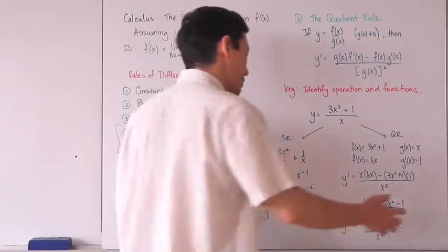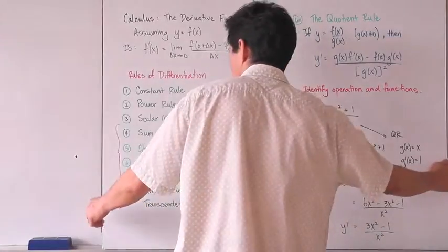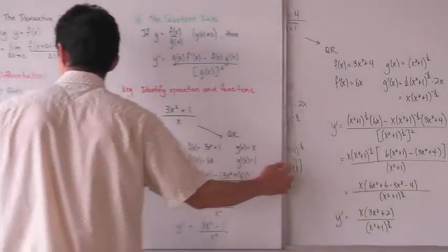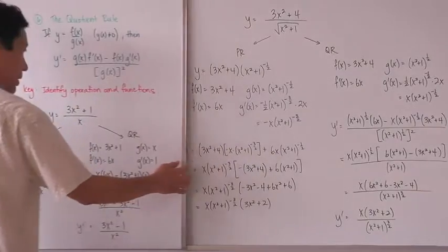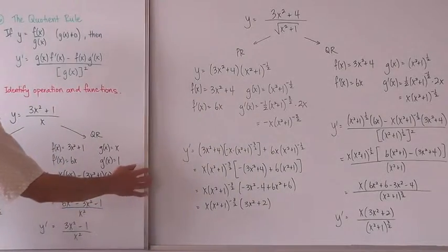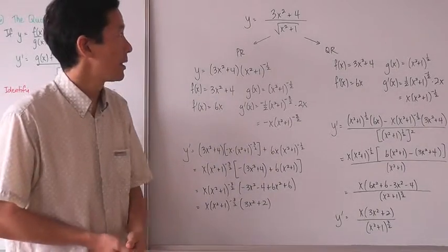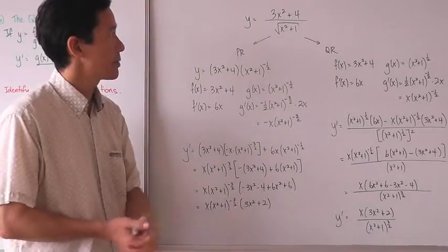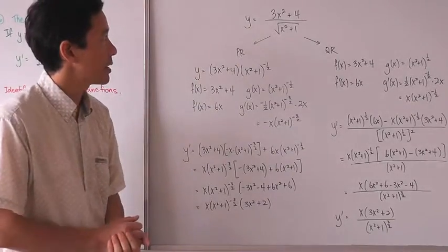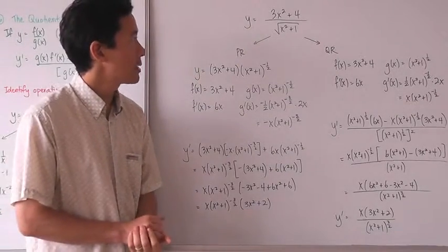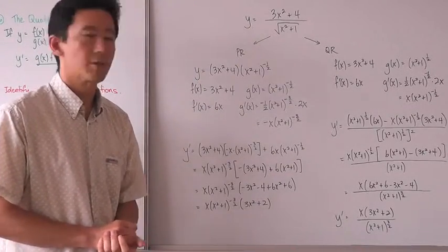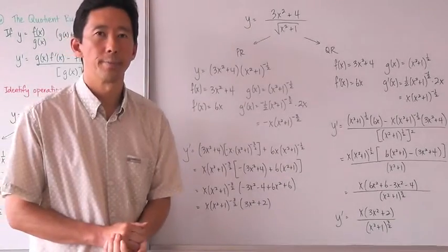There are going to be more complex situations, so let's take a look at those as well. For example, y is equal to 3x squared plus 4, all divided by the square root of x squared plus 1.